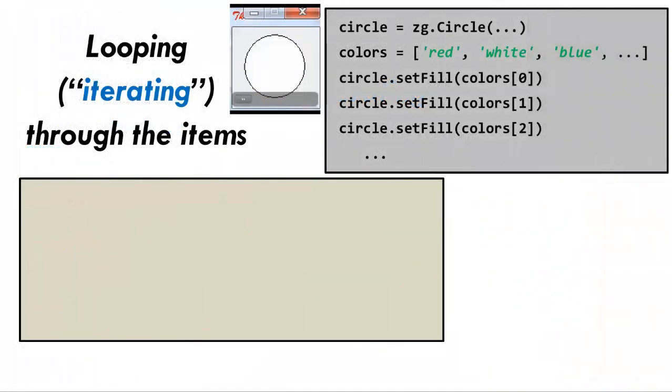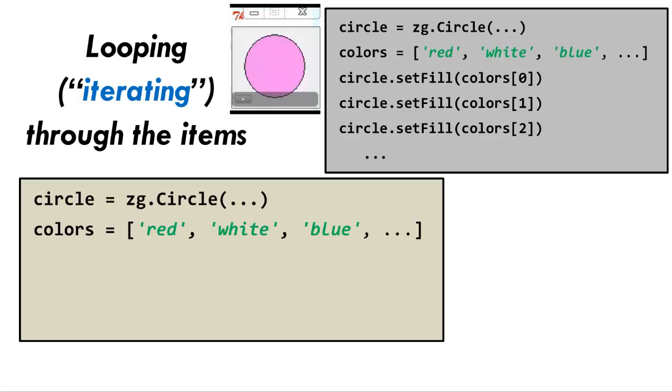So let's solve the problem again, this time using a loop. In the upper right, we have the code that we just wrote. Doing it with a loop, we construct a ZG circle as before. We make a list of colors as before.